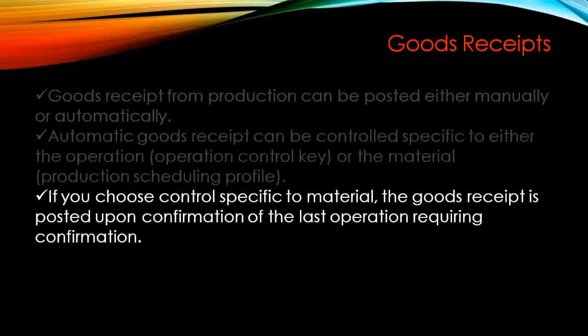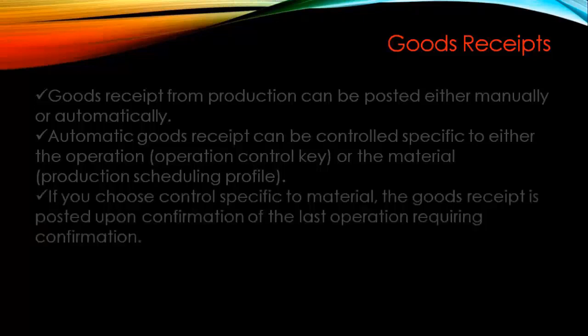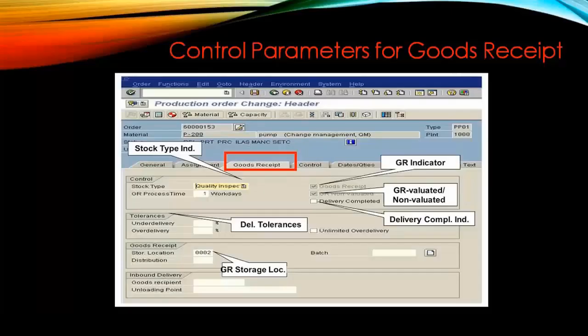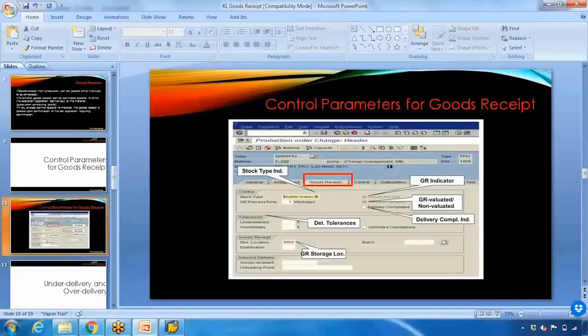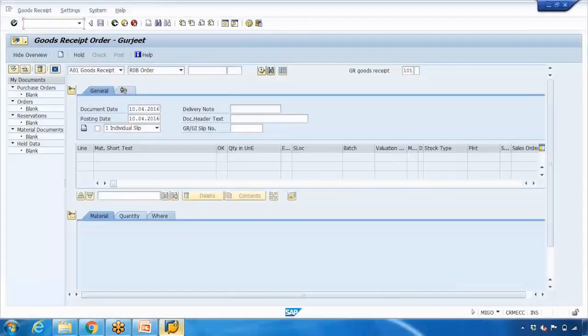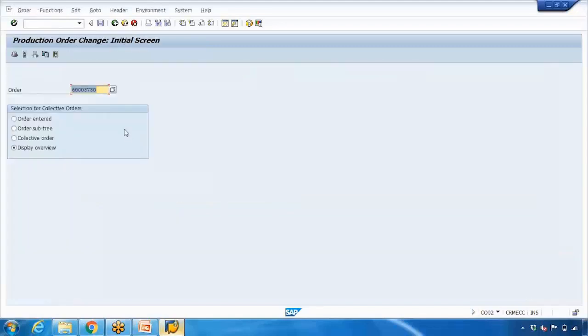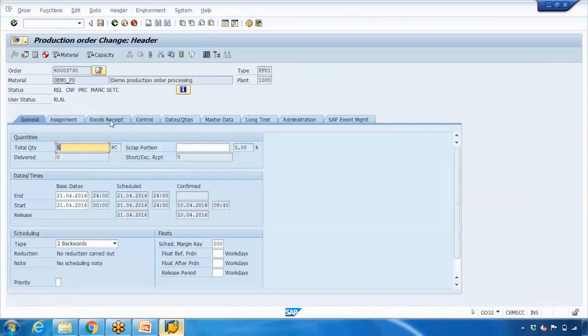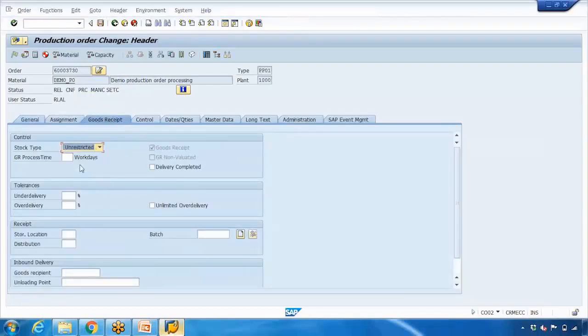If you choose control specific to material, the Goods Receipt is posted upon confirmation of the last operation requiring confirmation. So whenever the last operation with PP03 is confirmed, it will trigger the final Goods Receipt automatically. Now let me open an existing production order and go to the Goods Receipt tab to discuss the important fields there.